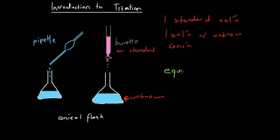The equivalence point is basically when everything in the unknown solution has completely reacted away. The same way that when we look at stoichiometry and figure out the ratios between reactants needed for a reaction to go to completion — the equivalence point is when that ratio has been achieved.